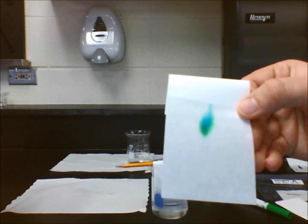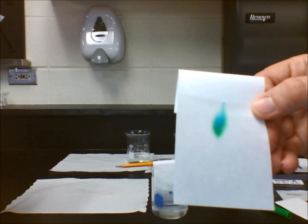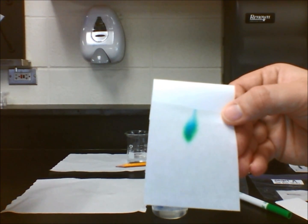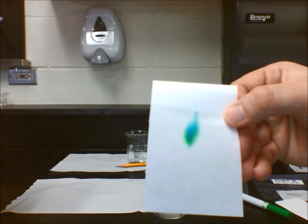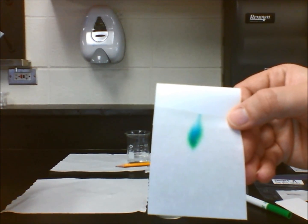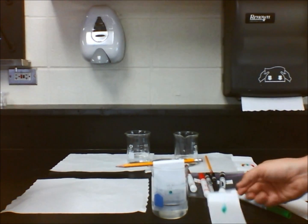Also, the blue and yellow solutes have different solubility rates because they are traveling up the medium at different speeds. The blue solute is more soluble than the yellow solute because it is higher up on the paper.